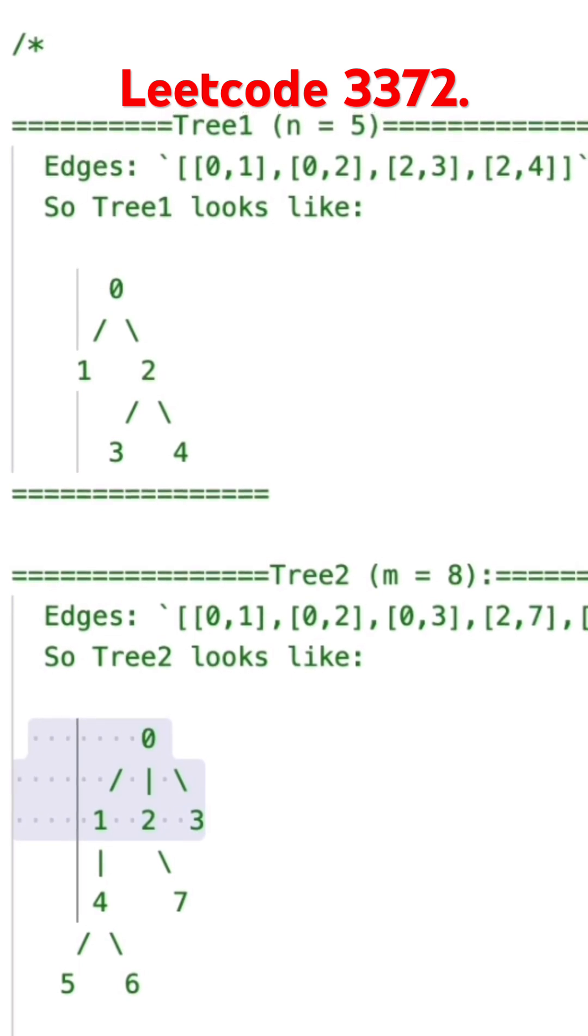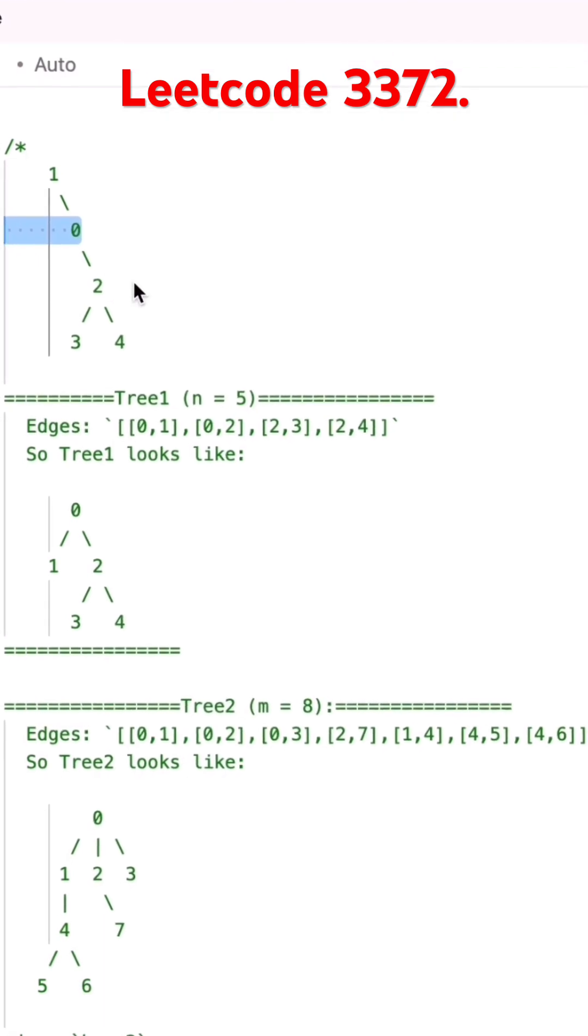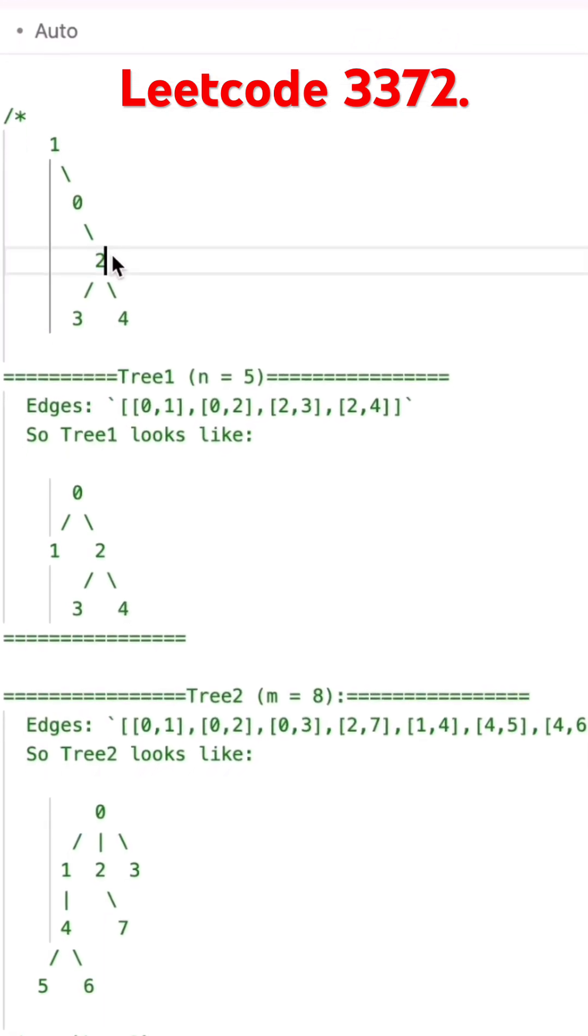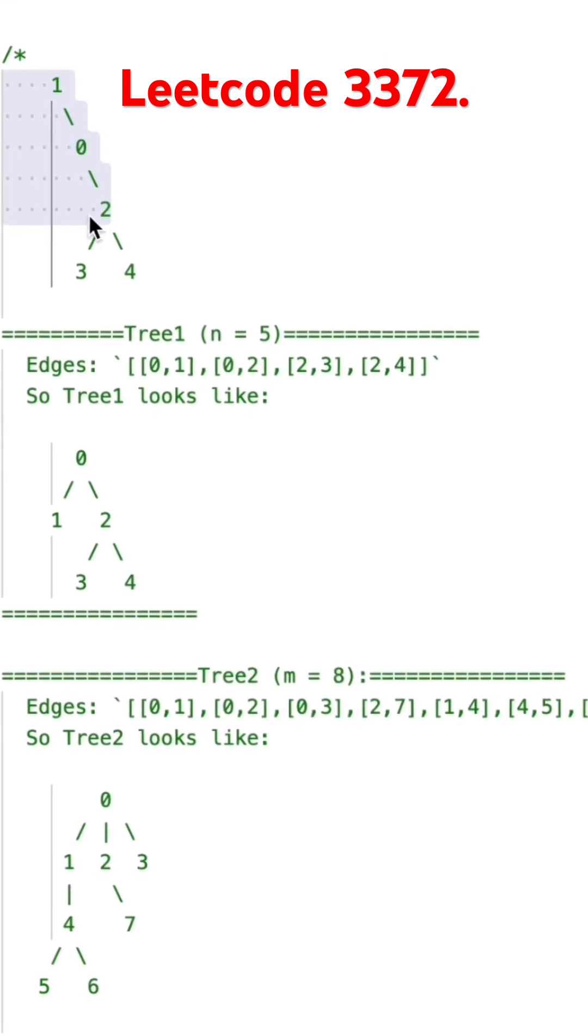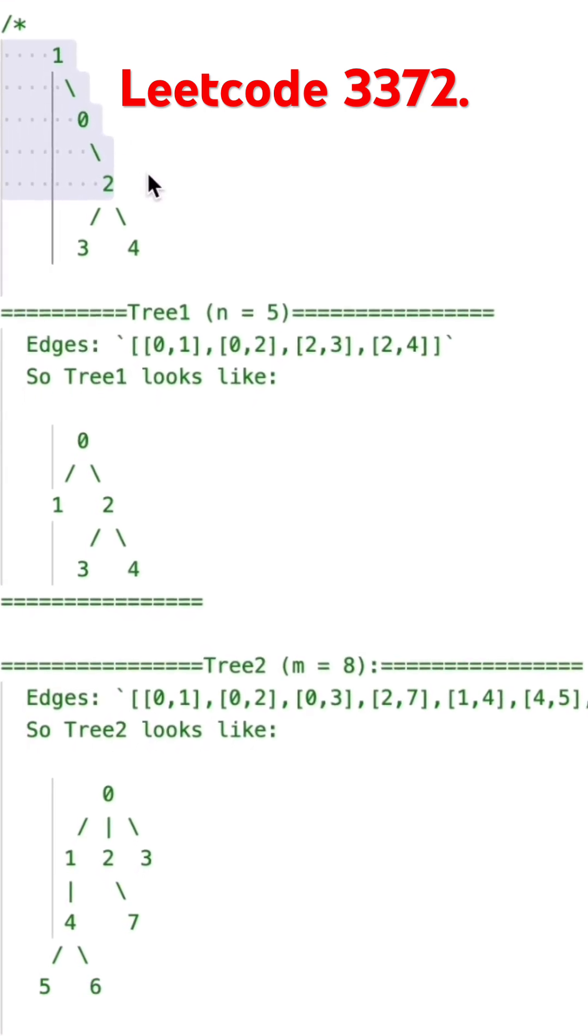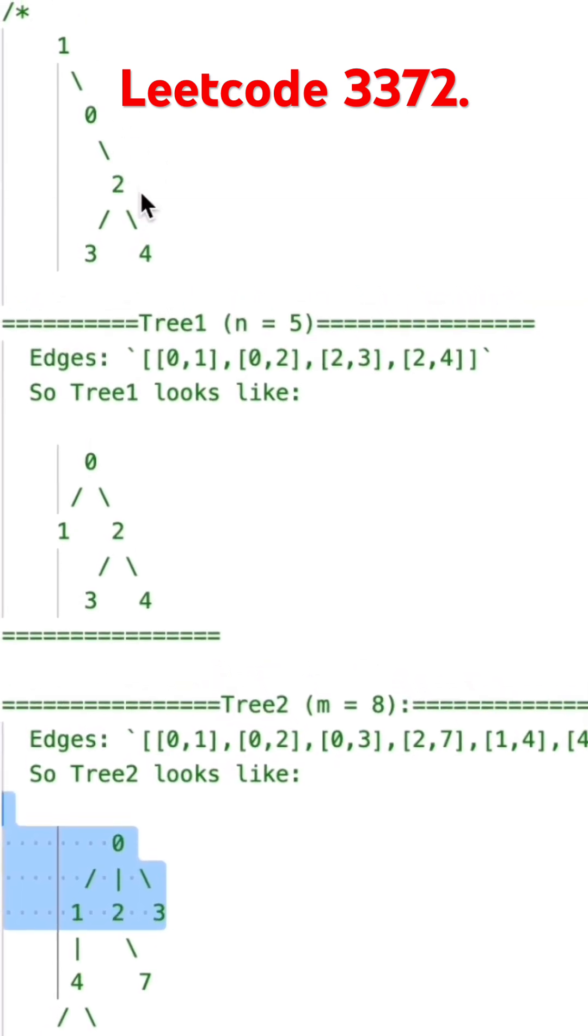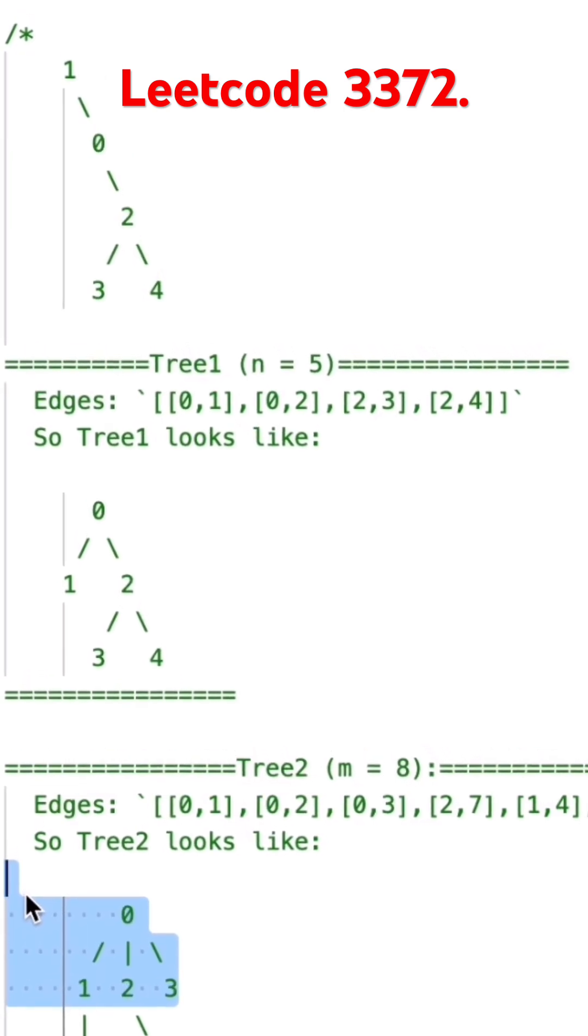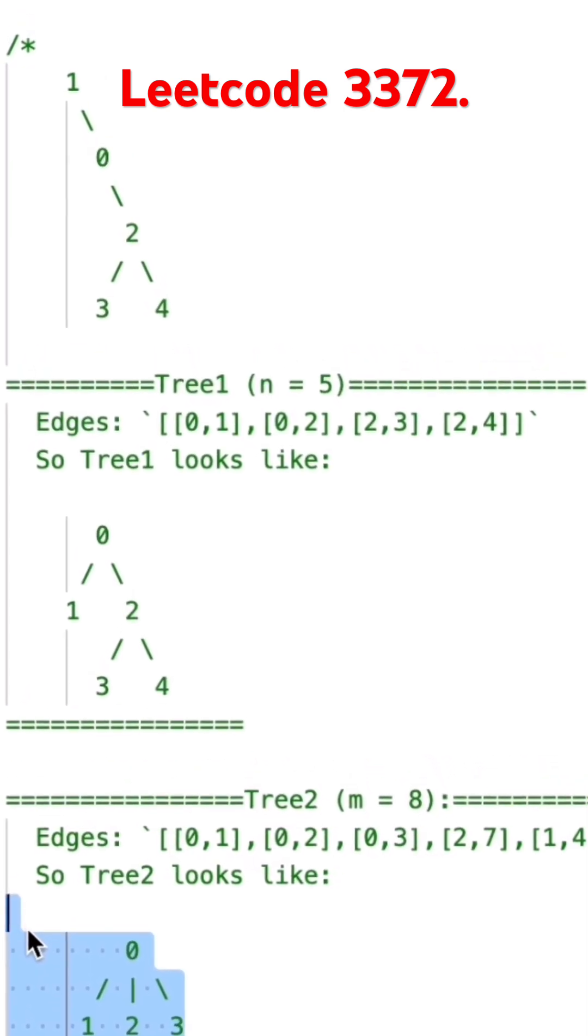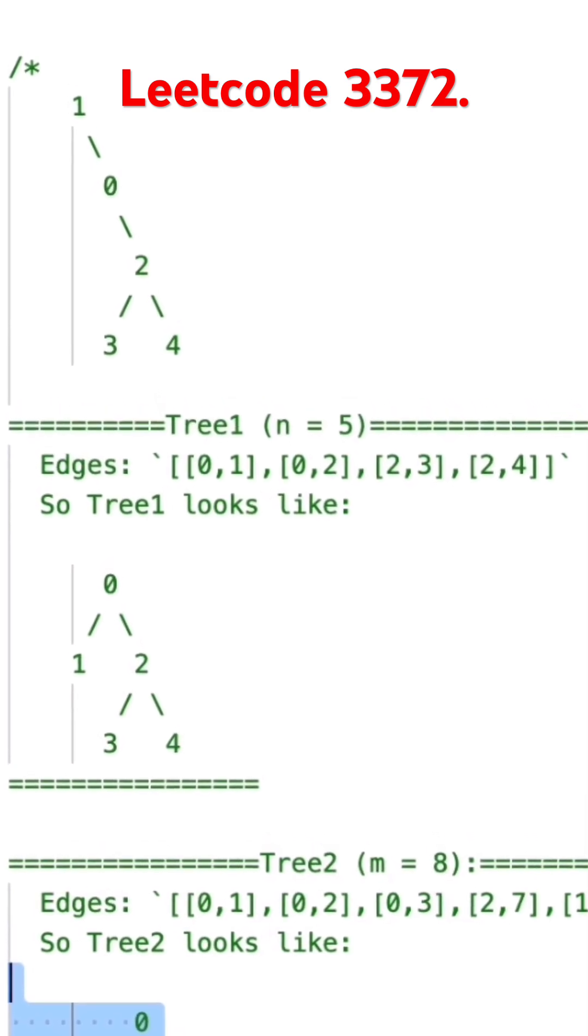This is level 0, this is level 1, this is level 2. Since k equals 2, these are 3 nodes that are reachable. There are 4 nodes here. How many nodes total? 3 plus 4 is 7, and you can see this is 7.